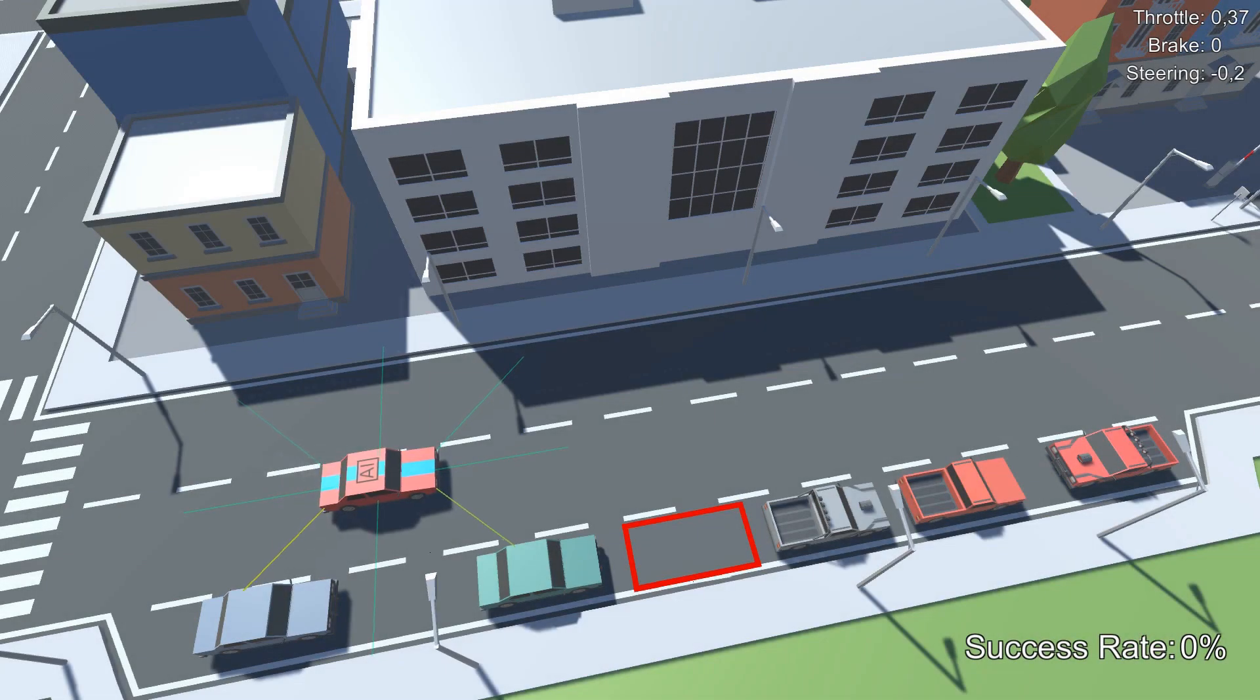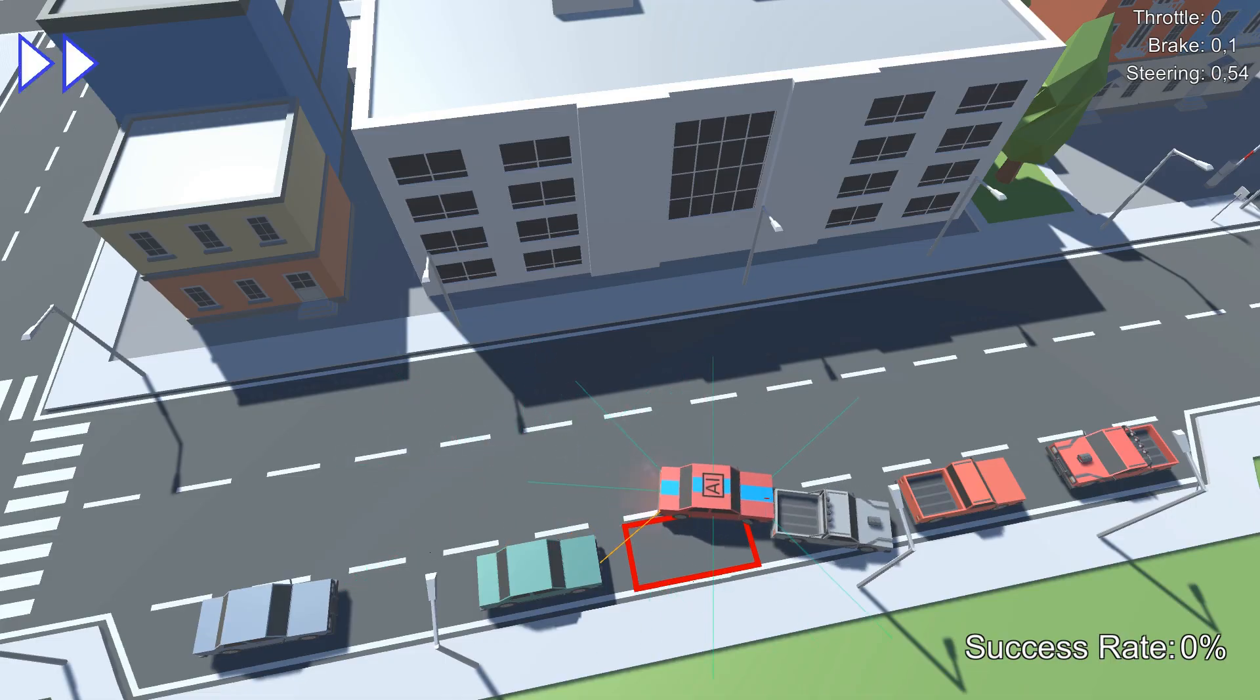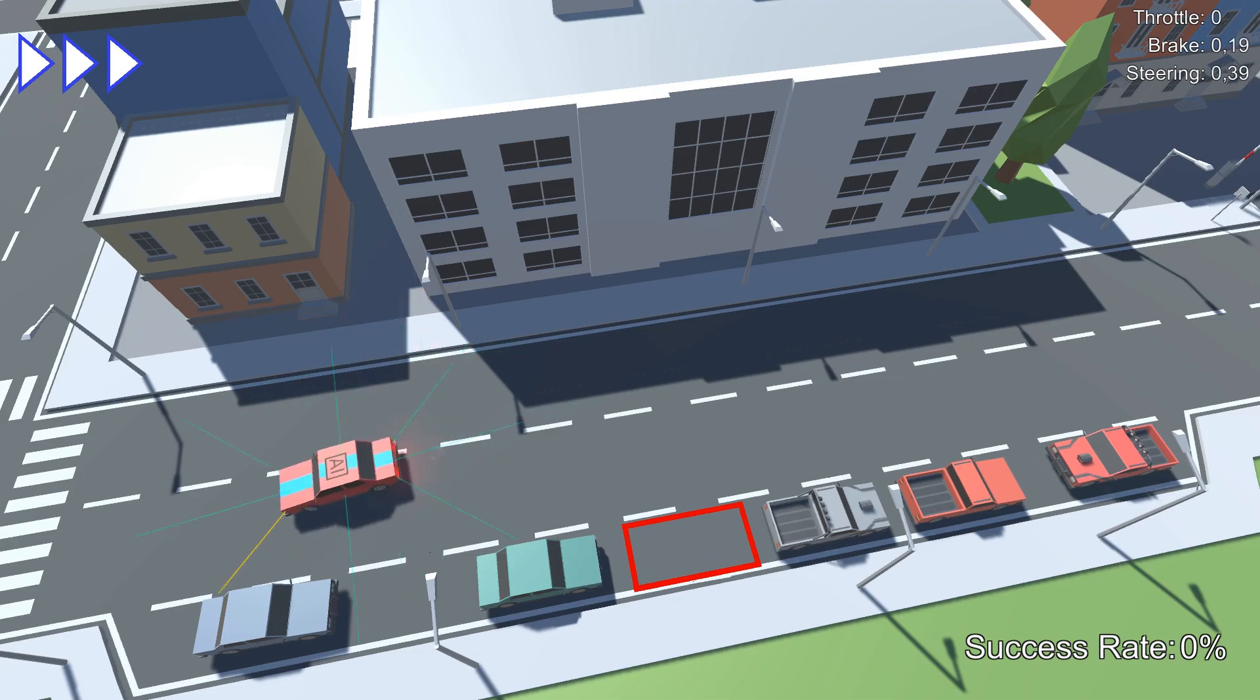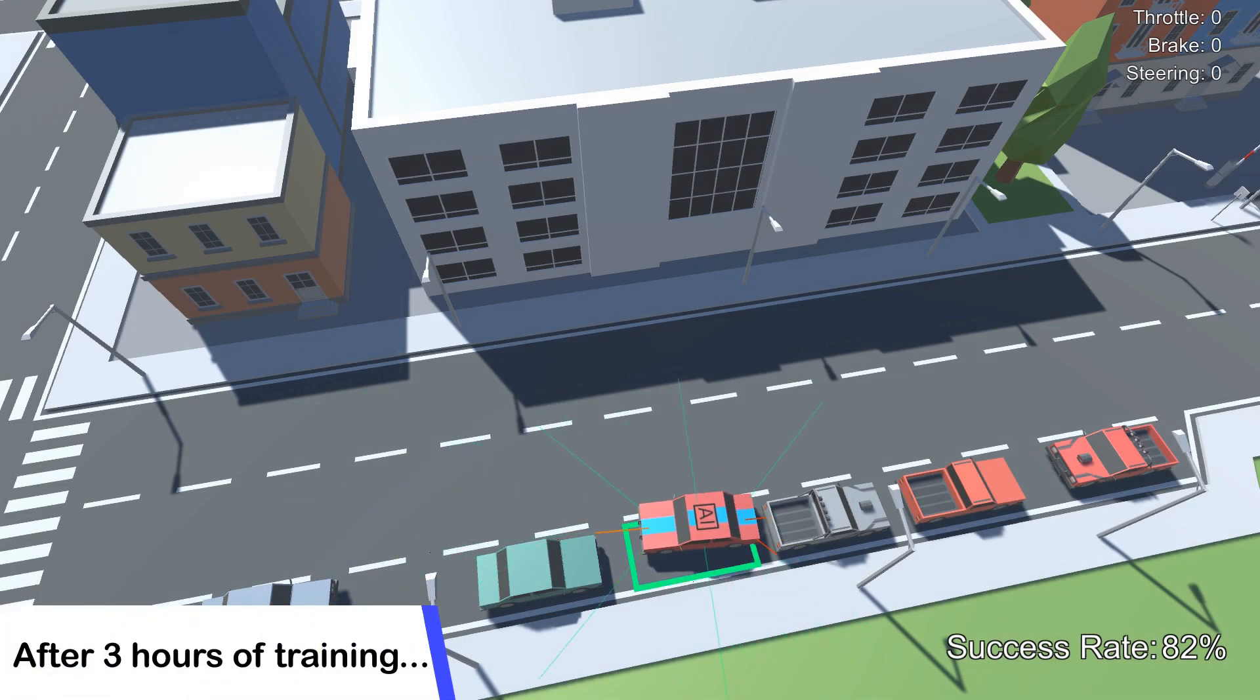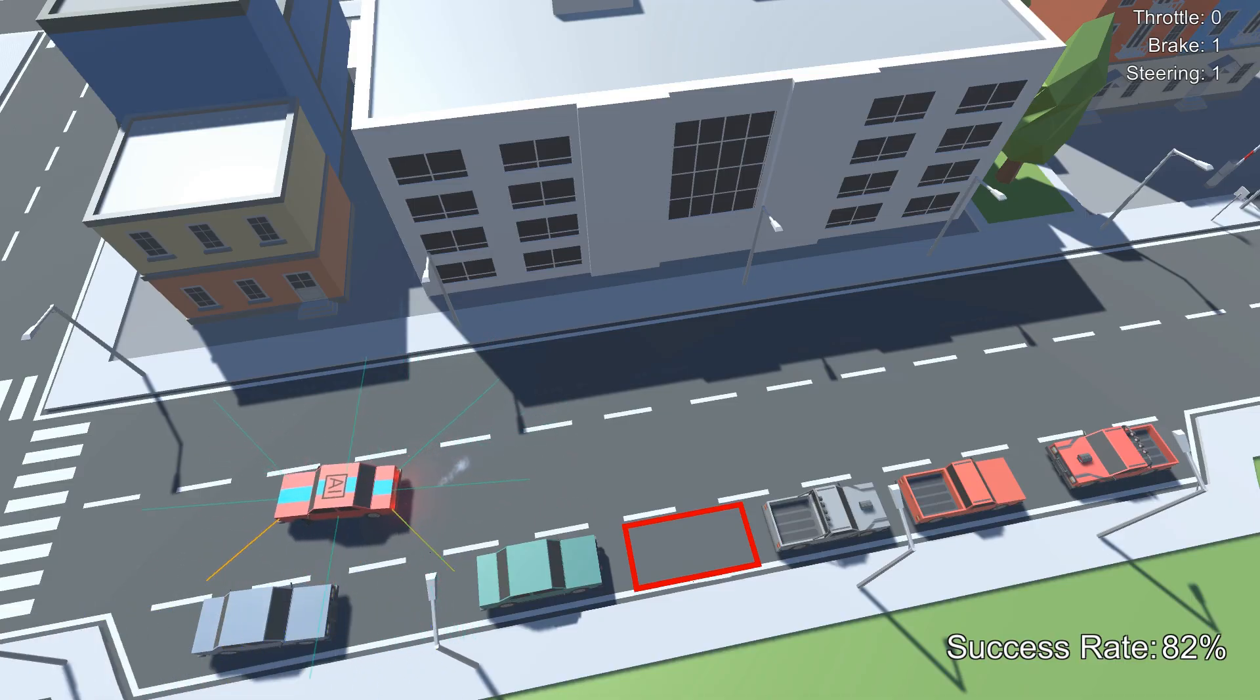Just like last time, the AI starts off completely random, so let's give it a couple of hours and then see how it performs. This is after about three hours of training and as you can see, the agent is actually able to somewhat park at the right spot.